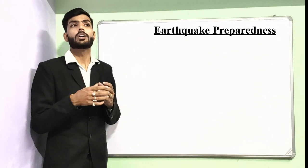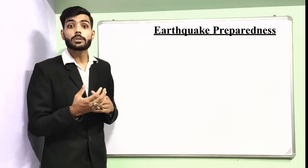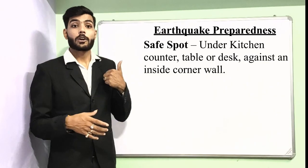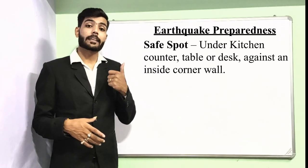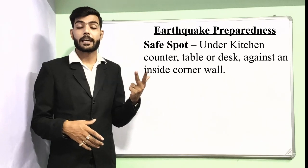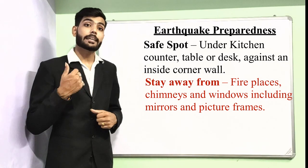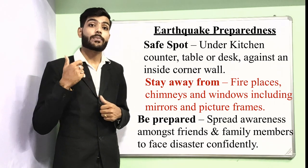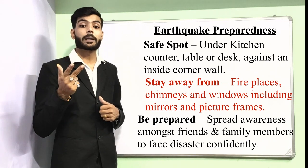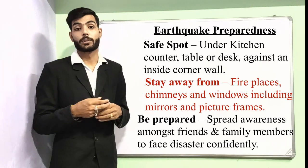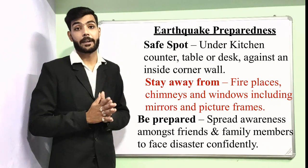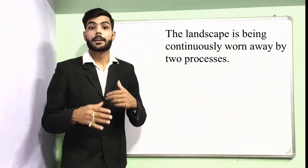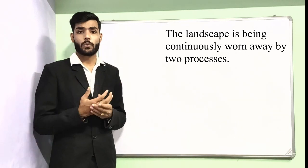When an earthquake comes, we need to find a safe spot. Safe spots include under the kitchen counter, under a table, under a desk, or inside a corner wall. You need to stay away from fireplaces, chimneys, windows, mirrors, and picture frames, as these can hurt you. The third step is to be prepared and make your friends and family members aware to face this disaster confidently.